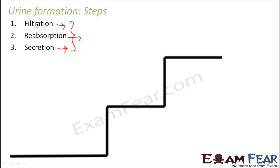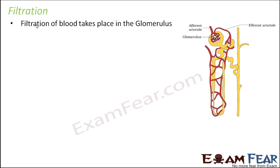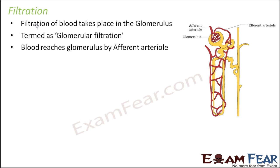As a result of these three steps, we are left with a filtrate which contains only the waste materials, excess water, excess ions, and such stuff. That is then thrown out of the body through the urethral aperture. Now the first step is filtration, and this filtration of blood takes place in the glomerulus — that is why it is also known as glomerular filtration. Here the blood reaches the glomerulus by the afferent arteriole. In this picture you can see the afferent arteriole taking the blood inside the glomerulus.